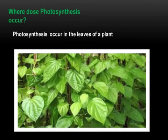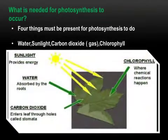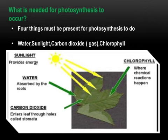Where does photosynthesis occur? Photosynthesis occurs in the leaves of a plant. What is needed for photosynthesis to occur? Four things must be present: water, sunlight, carbon dioxide, and chlorophyll. See the diagram.